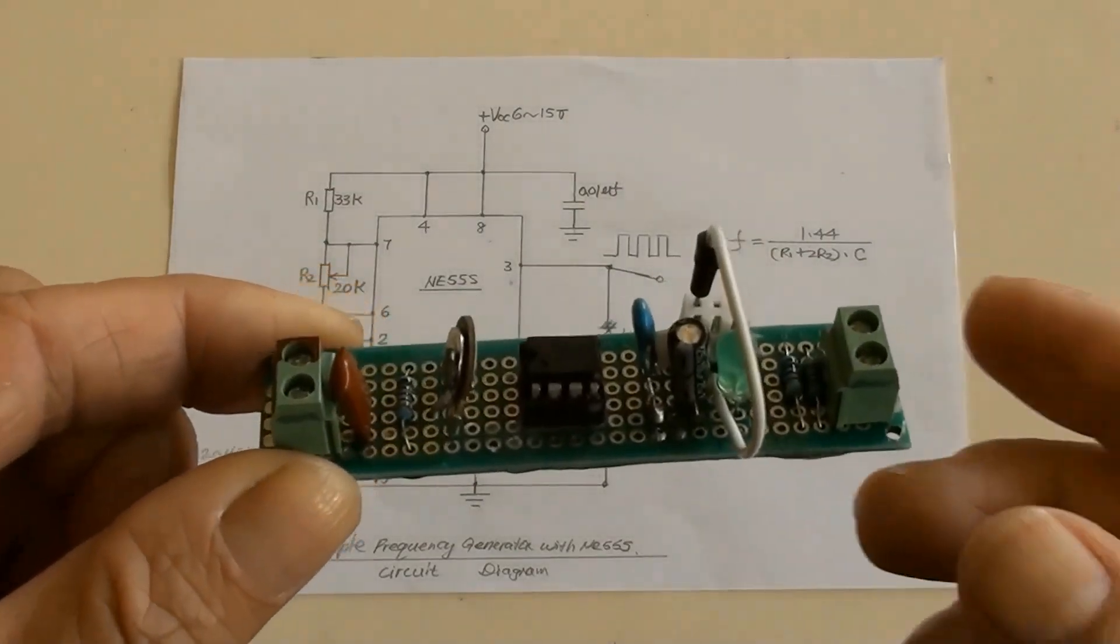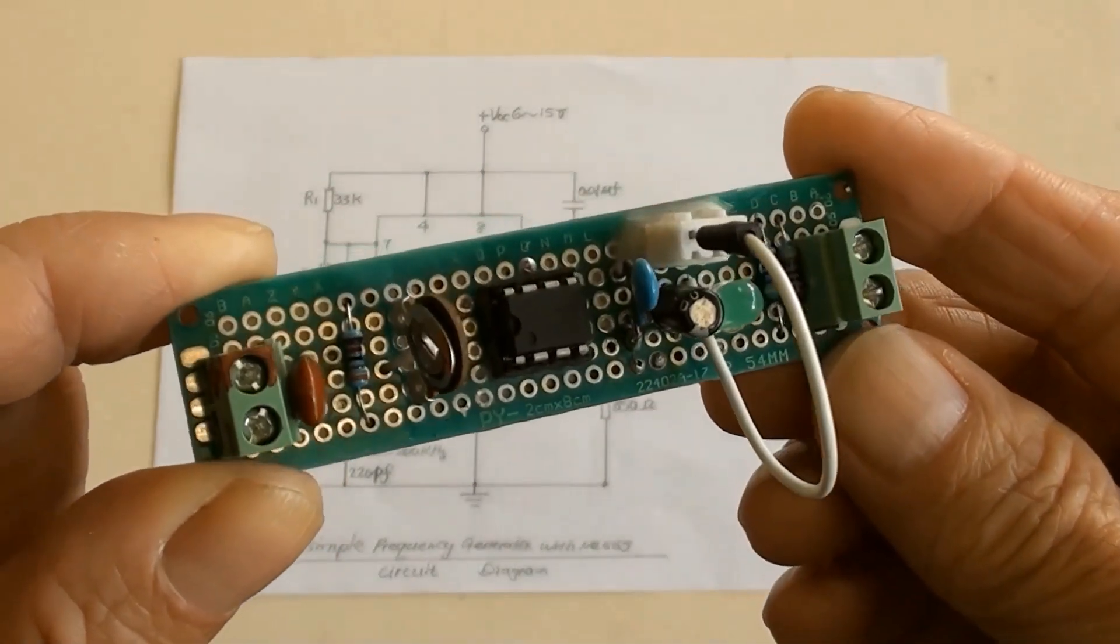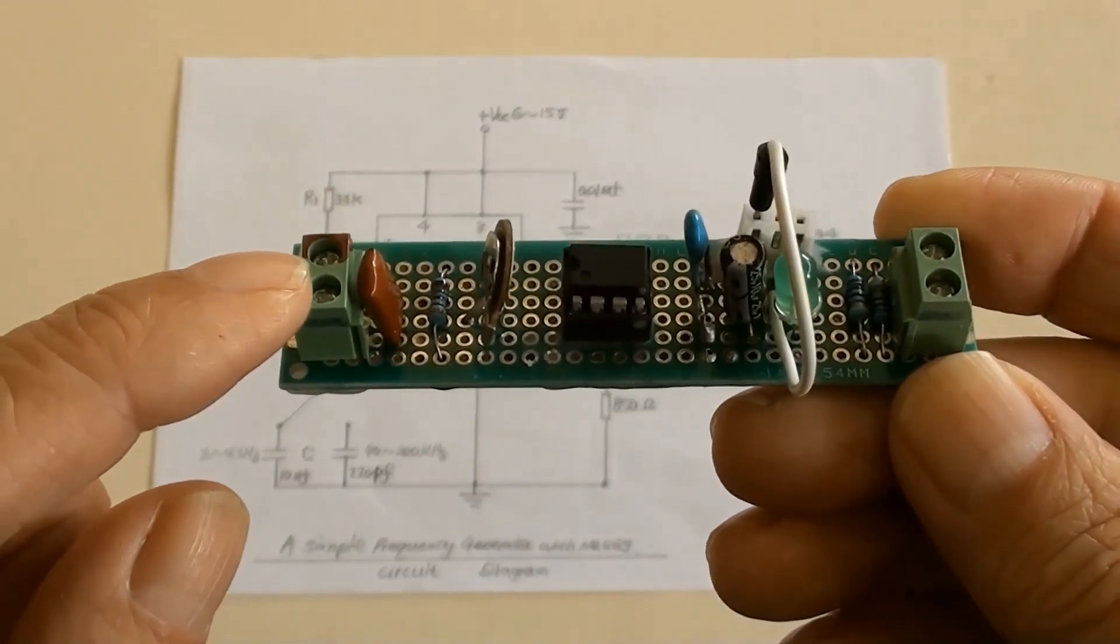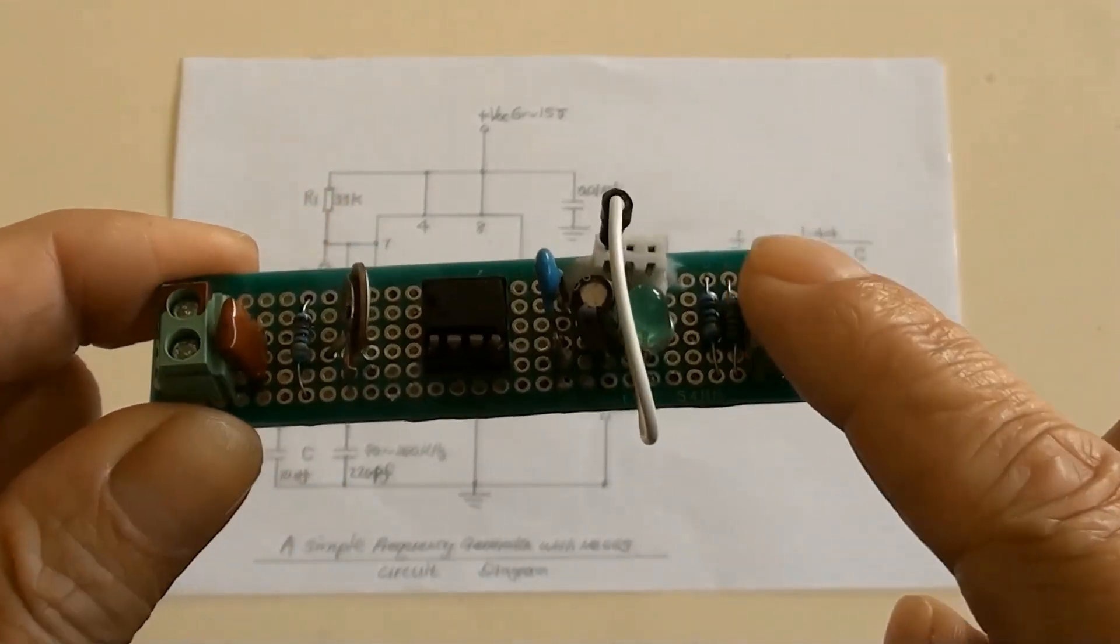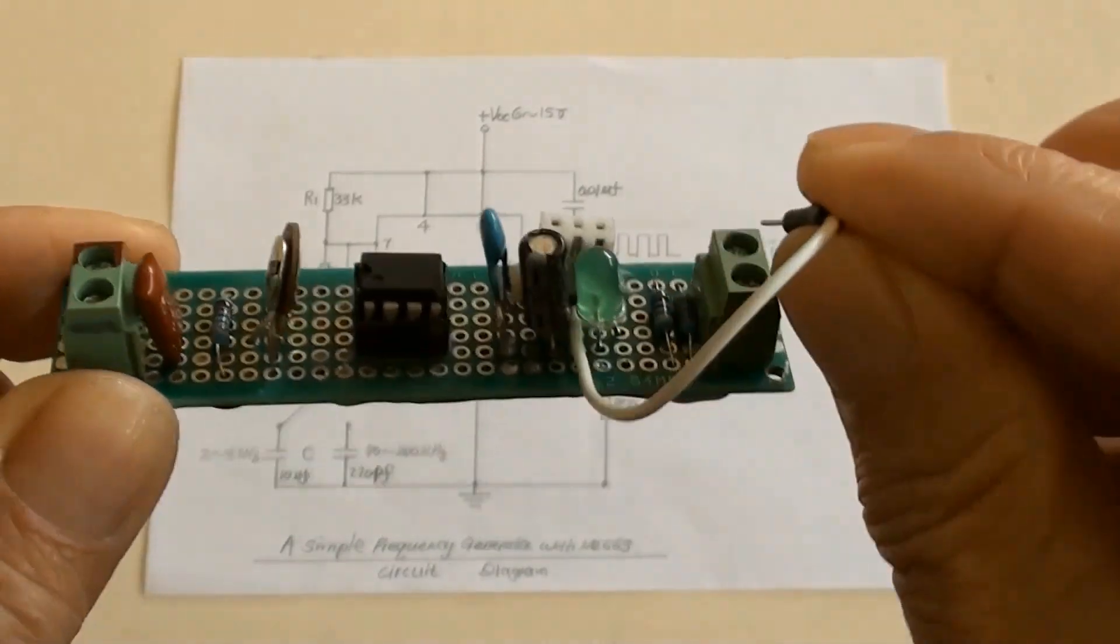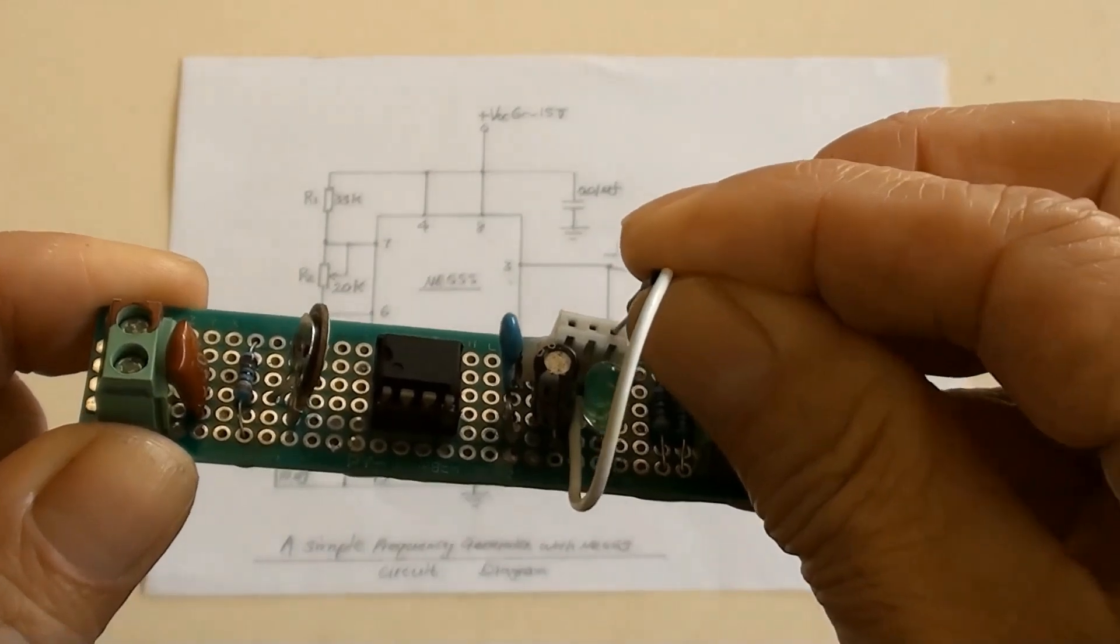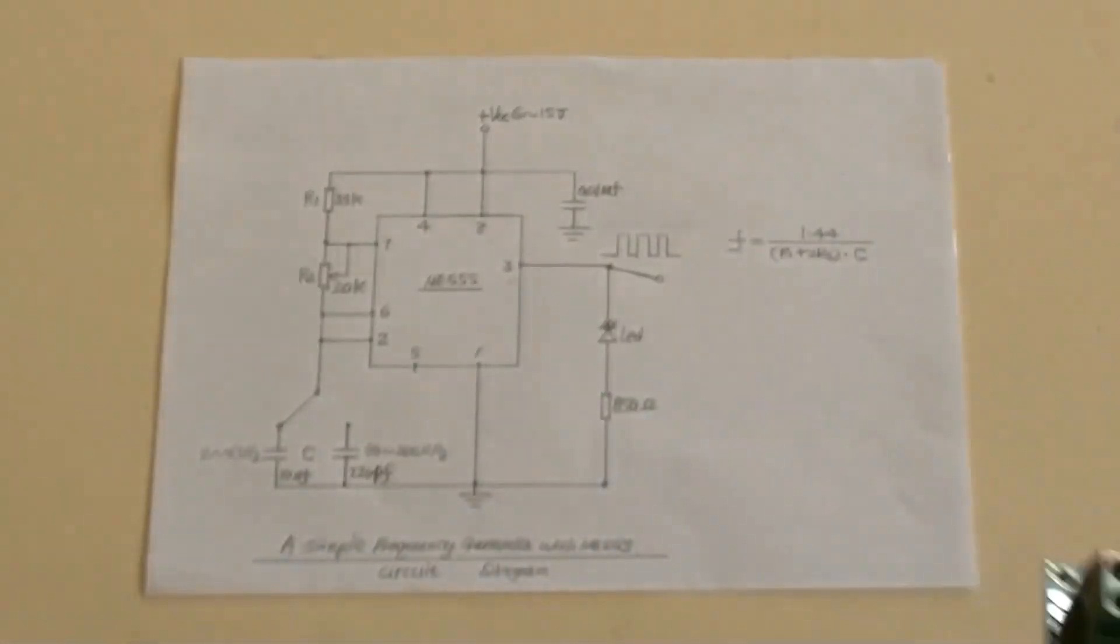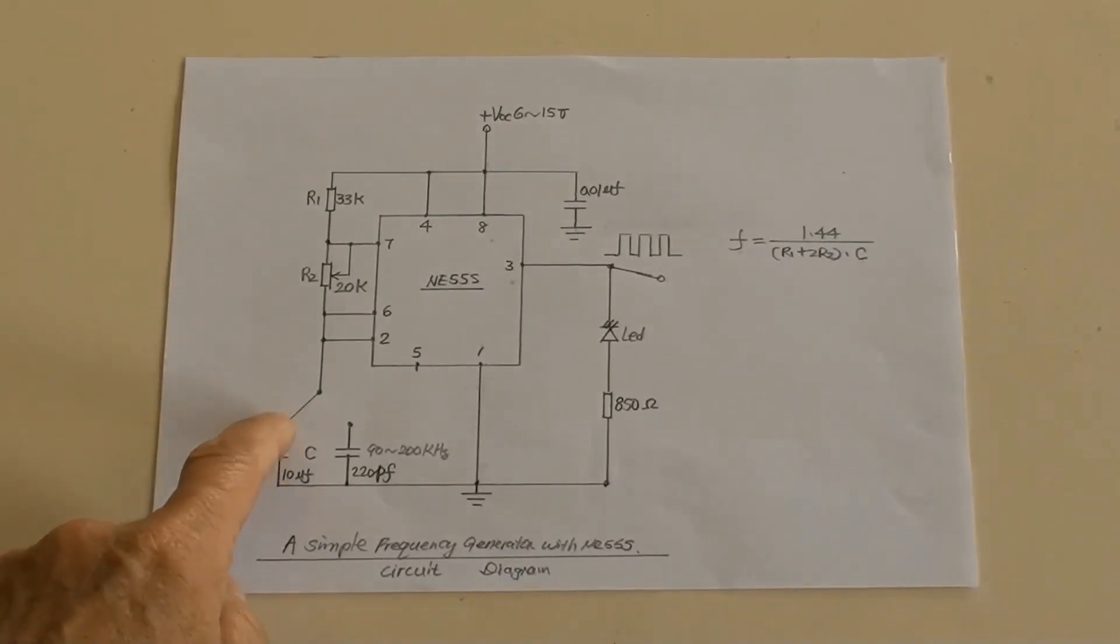Here we go. All parts have been installed and soldered on the mini breadboard. This side is for the input of DC power, and that side is for the output of square signal. A white wire pinned in this position is for low frequency range, and pulled out or pinned in this position is for high frequency range, as shown in the diagram for switching the capacitors.